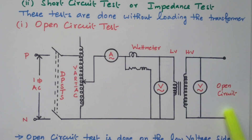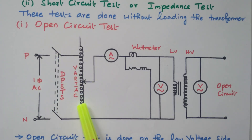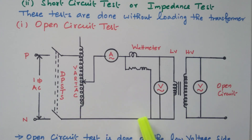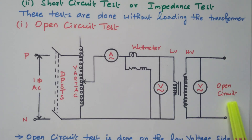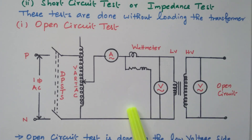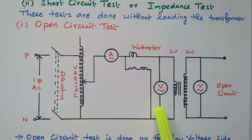At no load, the secondary is kept open. Supply is given to the primary winding by closing the DPST switch. By varying the variac, the rated voltage is applied to the primary winding. Since the secondary is kept open, there is no current flow in the secondary — only the no load current I₀ flows through the primary. There is no load current in the secondary, so the current flowing in the primary is also very small; that is called the no load current.